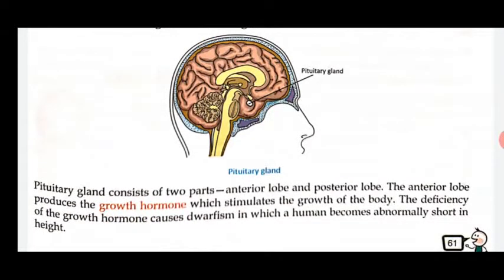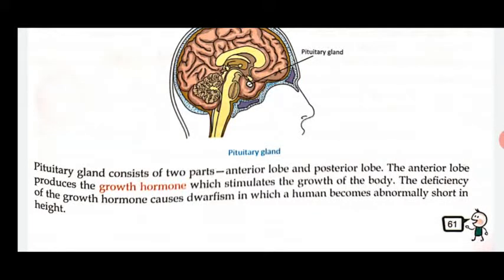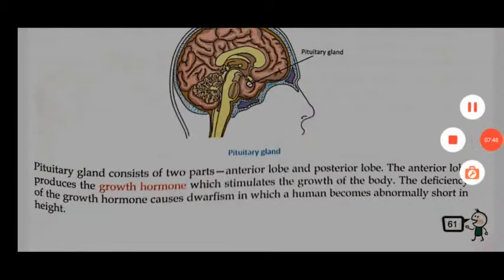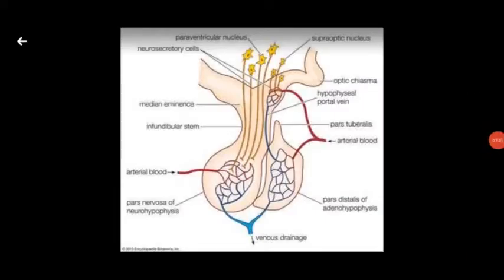The pituitary gland consists of two parts: the anterior lobe and the posterior lobe. You can see in the picture — the left circular portion is the anterior lobe and the right-hand side portion is the posterior lobe. So the pituitary gland has two lobes: the anterior lobe and the posterior lobe.